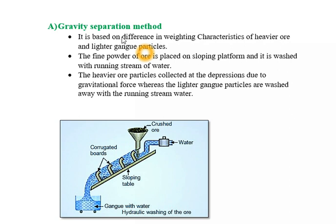The first process is gravity separation method. As the name suggests, it is based on the difference in wetting characteristics of heavier ore and lighter gangue particles. In this process, the fine powder of ore is placed on a sloping platform and washed with a running stream of water. The heavier ore particles are collected at the depression due to gravitational force, whereas the lighter gangue particles are washed away with the running stream of water.